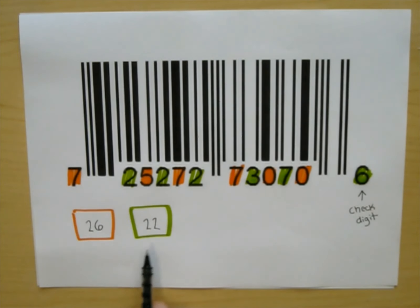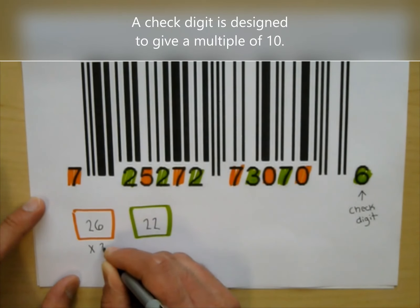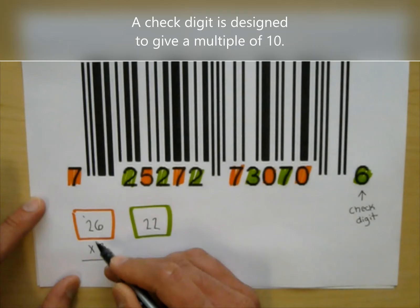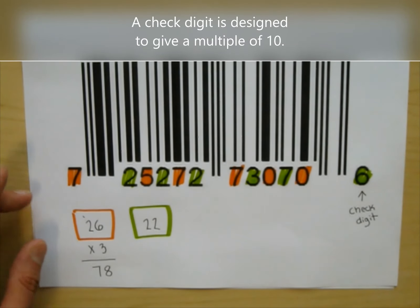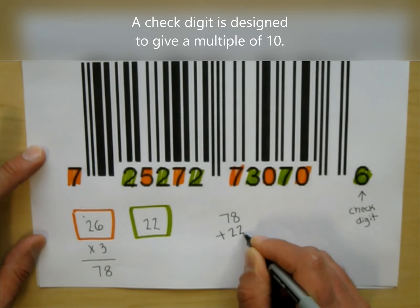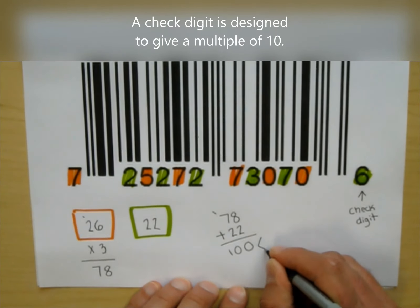Now you might think to yourself, well, if you add those two numbers together, you get 48, which is not a multiple of 10, but we're not done. So this is the crazy scheme that happens with barcodes. You multiply the orange number by 3. I'm doing this all by hand, by the way. So 3 times 6 is 18, carry the 1. And then we have 6, 78. It's the 78 that you add to the 22, which gives you 7, 8, 9, 10. It gives you a what? Multiple of 10.